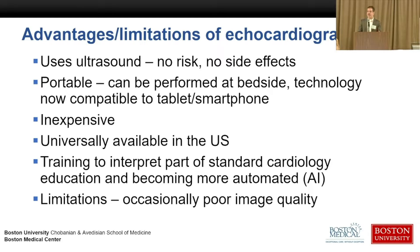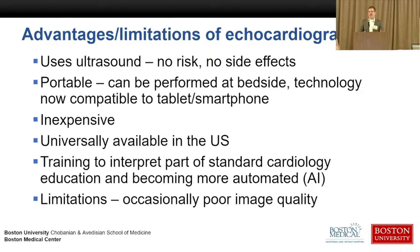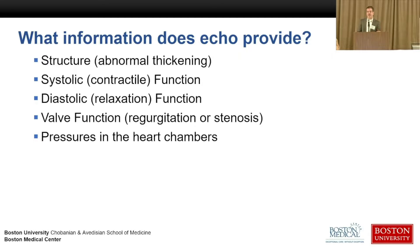Echo is not that hard to interpret, and it's becoming a lot more automated with artificial intelligence — letting the machine determine what's normal and make measurements. The problem with echo is that it occasionally gives poor image quality, unlike blood tests which almost always work. Echo provides information on structure and wall thickening, systolic squeezing function, diastolic function or relaxation, valve function, and pressures — which is what translates into symptoms.